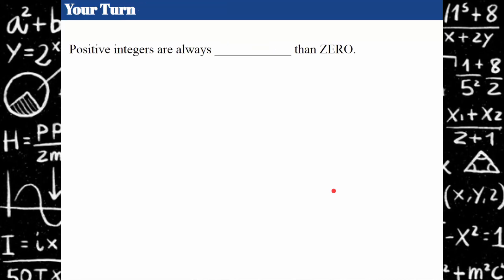Positive integers are always blank than zero. Go ahead and pause, come back when you're ready. Positive integers are always greater than zero. Remember your number line or your thermometer, thinking about where the positive values are in reference to zero and the negative values.